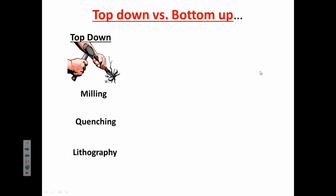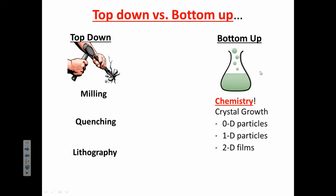So there's some different techniques. When you're doing this chipping away at something large, there's different techniques called milling, quenching, and lithography. As far as growing crystals, we're really talking about chemistry here. And you can grow Zero-D, One-D, or Two-D nanostructures.